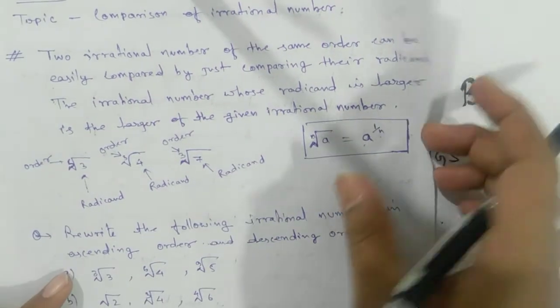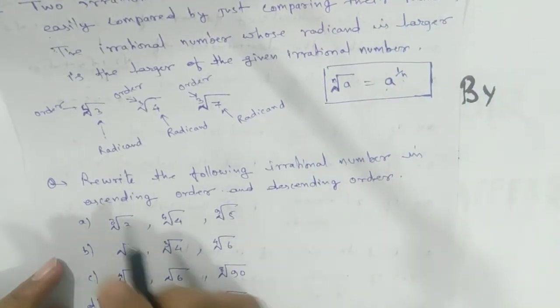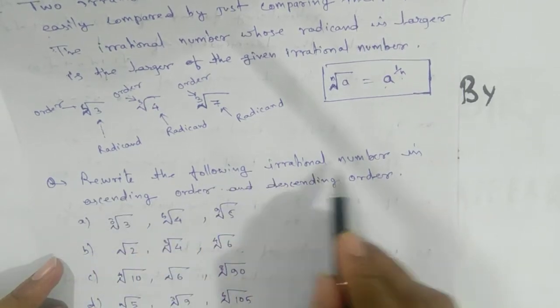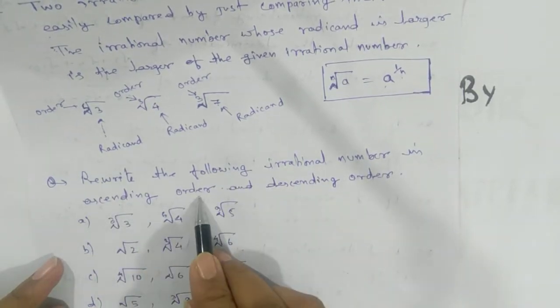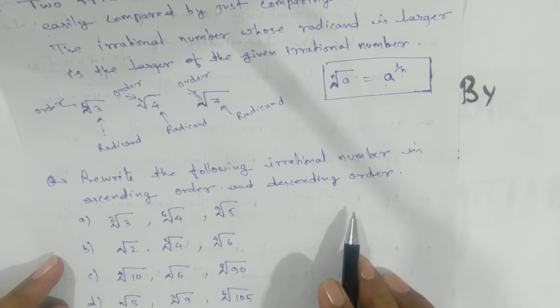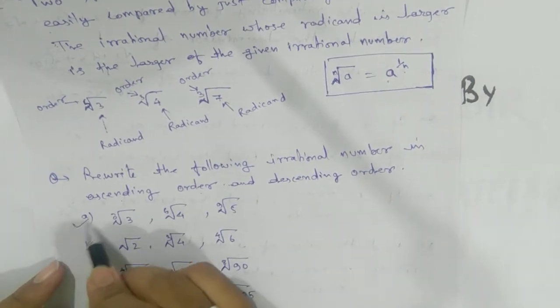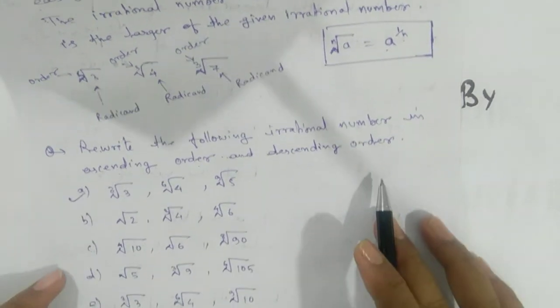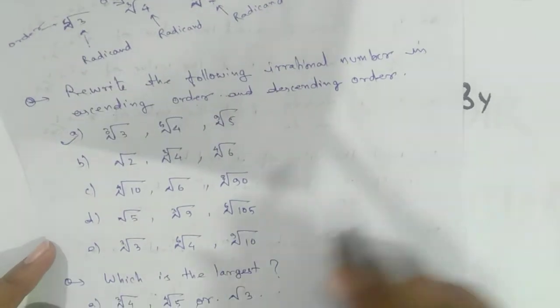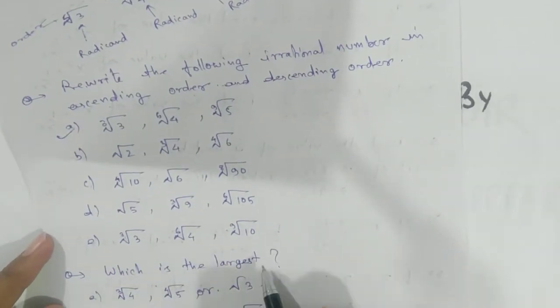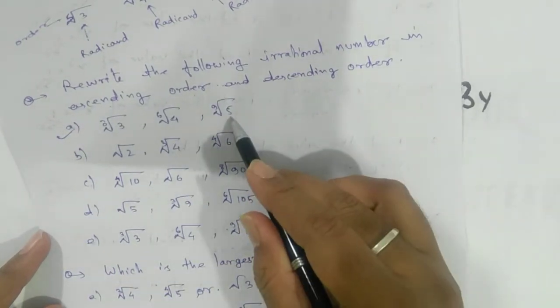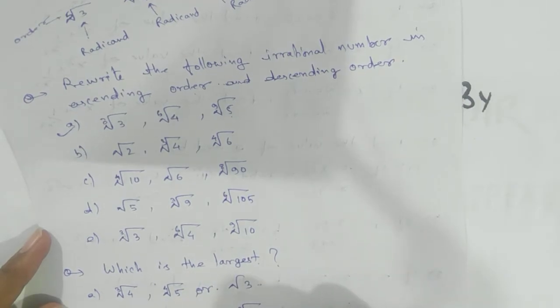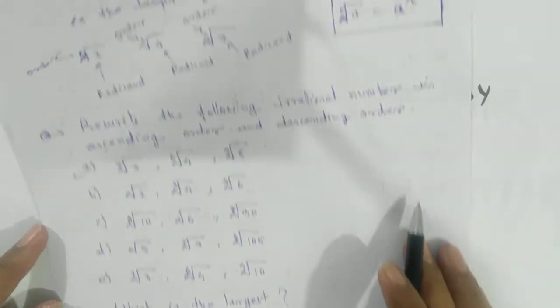Here we have a problem: rewrite the following irrational numbers in ascending order and descending order. I'll go for the first problem and the rest you need to solve. If you know this one, then you can easily solve these two problems also.